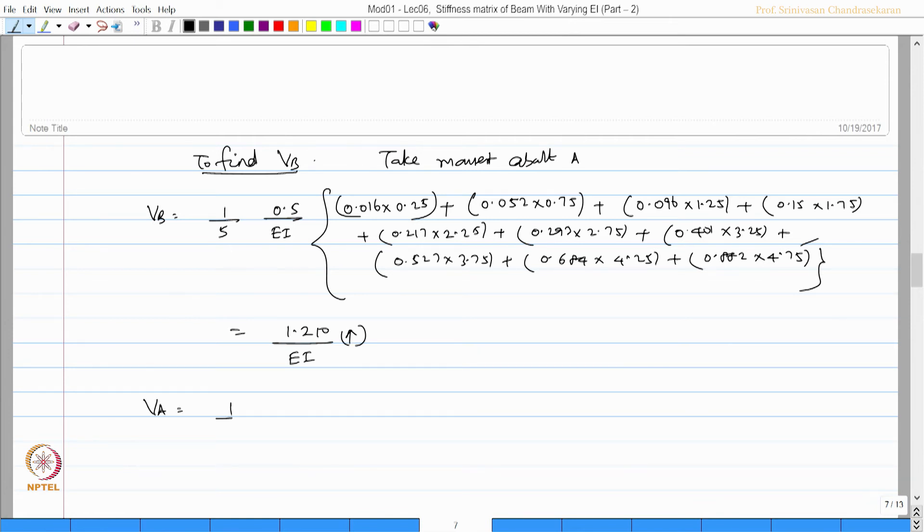This will give me V_B as 1.210 by EI of the vertical value. Now V_A can be computed as 1 by EI of, as usual, pick up only the ordinates of this diagram: 0.016, 0.052, 0.096, 0.15, 0.217, 293, 401, 527, 684, 882. The width of the strip is 0.5 and subtract this 1.21 from here to get V_A. So friends, which is now equal to 0.45 by EI downward.